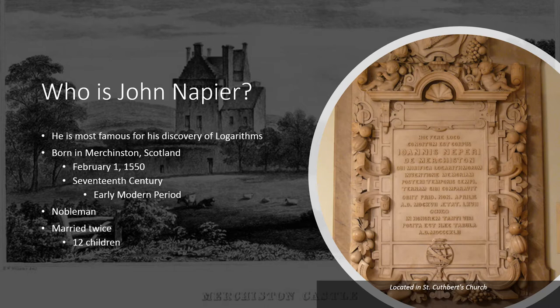Who is or was John Napier? Well, he is most famous for his discovery of logarithms, which we have used in this class. He was born in Merchantston, Scotland on February 1, 1550. He was alive during the 17th century, which is also known as the early modern period. He was a nobleman, so his family were very wealthy and also very well known.